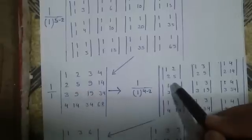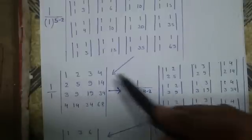And for this same process, 1, 2 common, 2, 5, 3, 9, 4, 14. Again, 1, 3 as common, 2, 9, 3, 19, 4, 34.